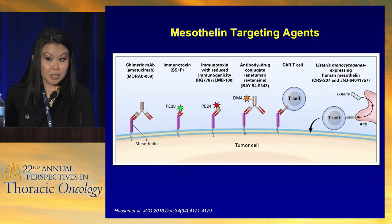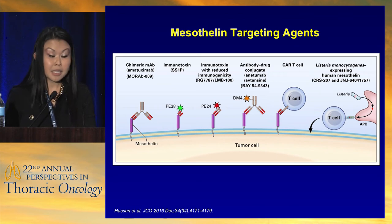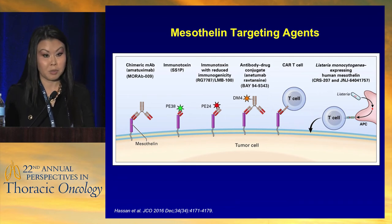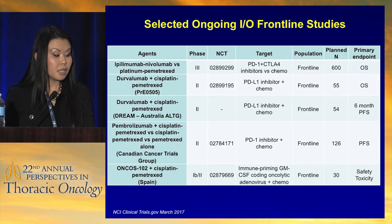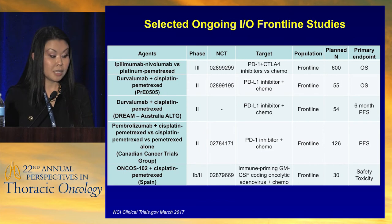Mesothelin-targeted agents have been extensively investigated. There are many ways of targeting mesothelin — monoclonal antibodies, CAR-T cells, and vaccines — because mesothelioma tumor cells highly express mesothelin. The ARTEMIS trial is ongoing: cisplatin-pemetrexed with and without amatuximab, with overall survival as the primary endpoint. This is a frontline trial for all comers hoping to demonstrate a benefit.